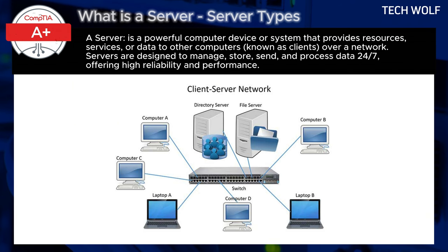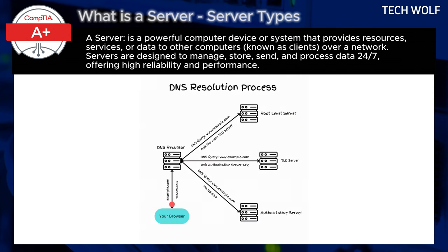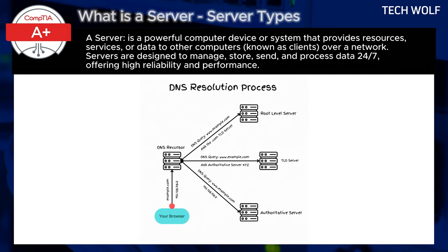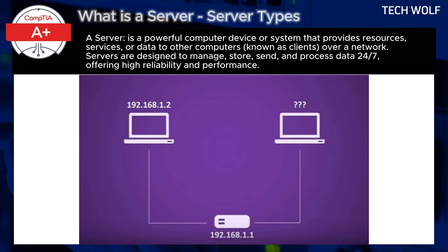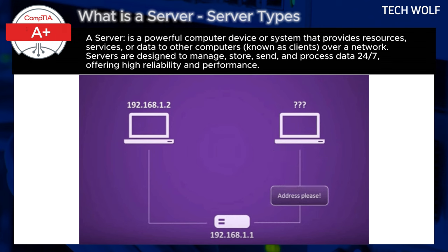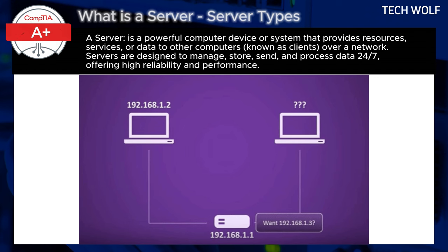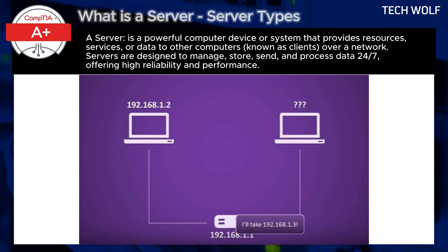FTP servers manage the transfer of files over the File Transfer Protocol (FTP). DNS servers resolve domain names to IP addresses, allowing users to find websites by name instead of IP address. DHCP servers automatically assign IP addresses to devices on a network. Print servers manage printers and print jobs, allowing multiple users to send print requests to shared printers.